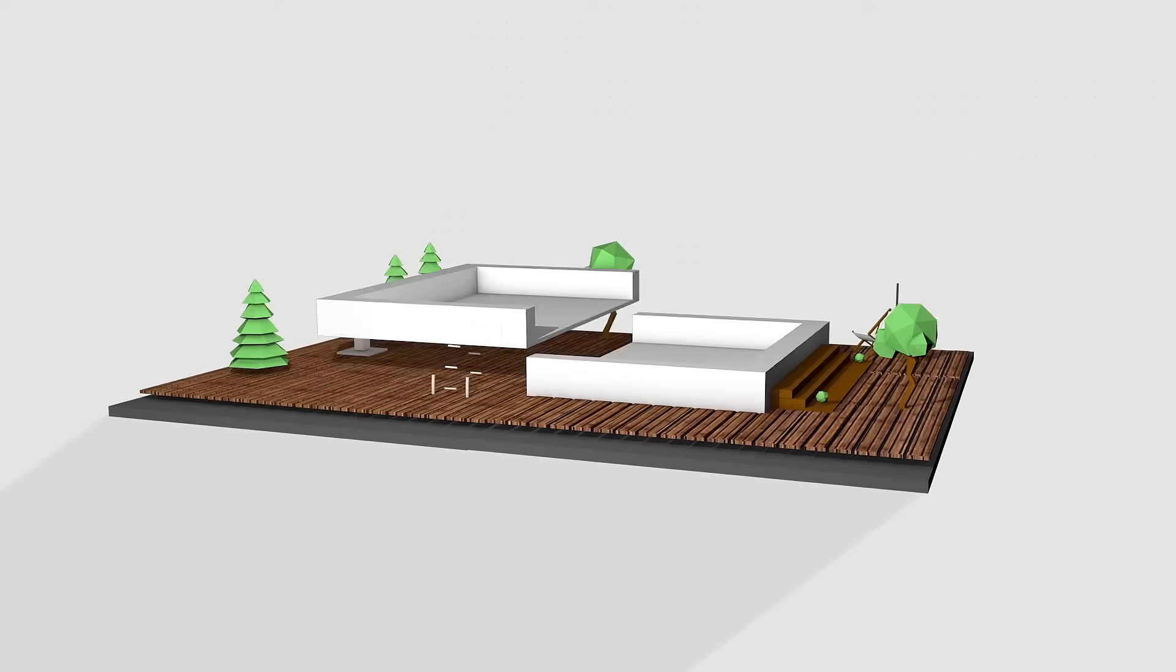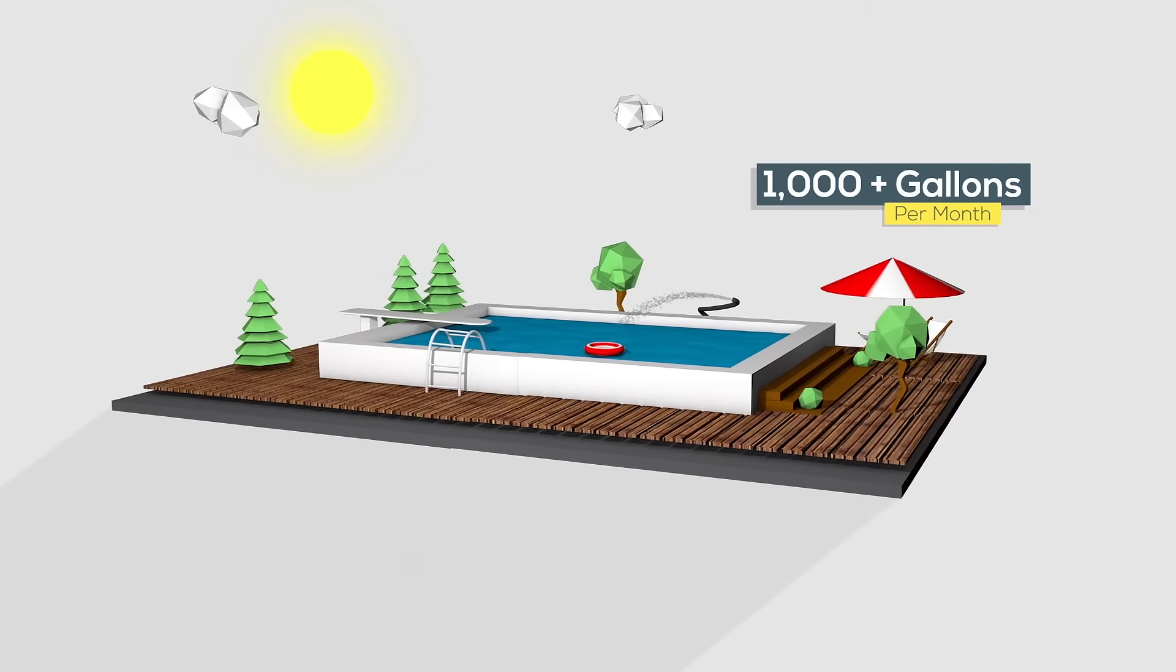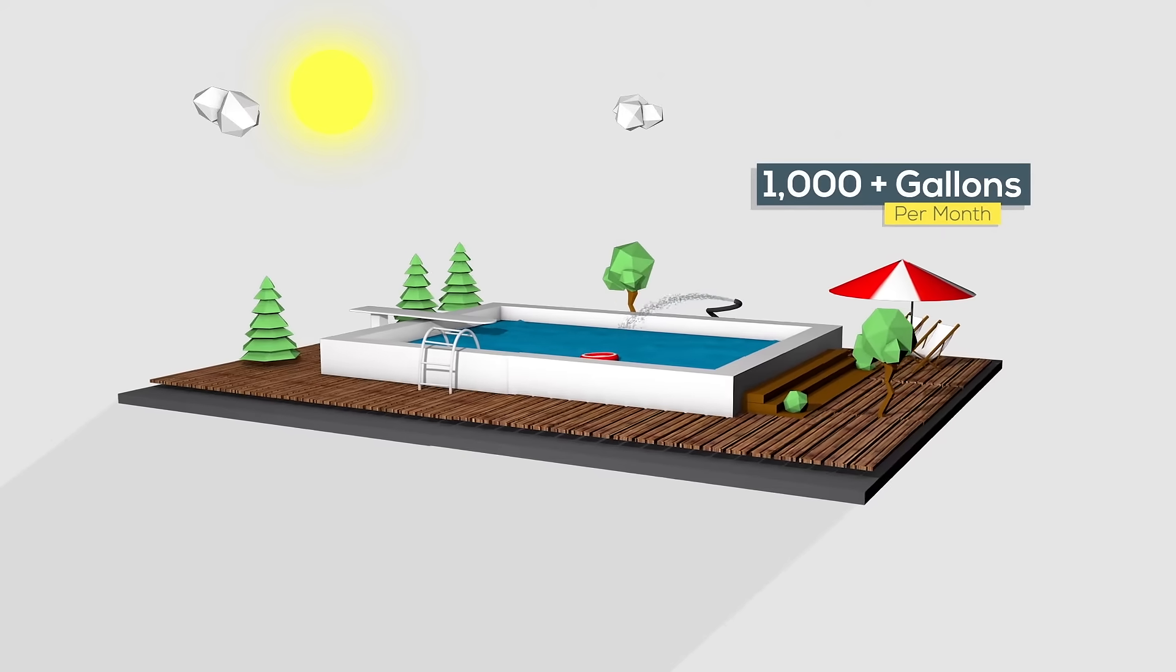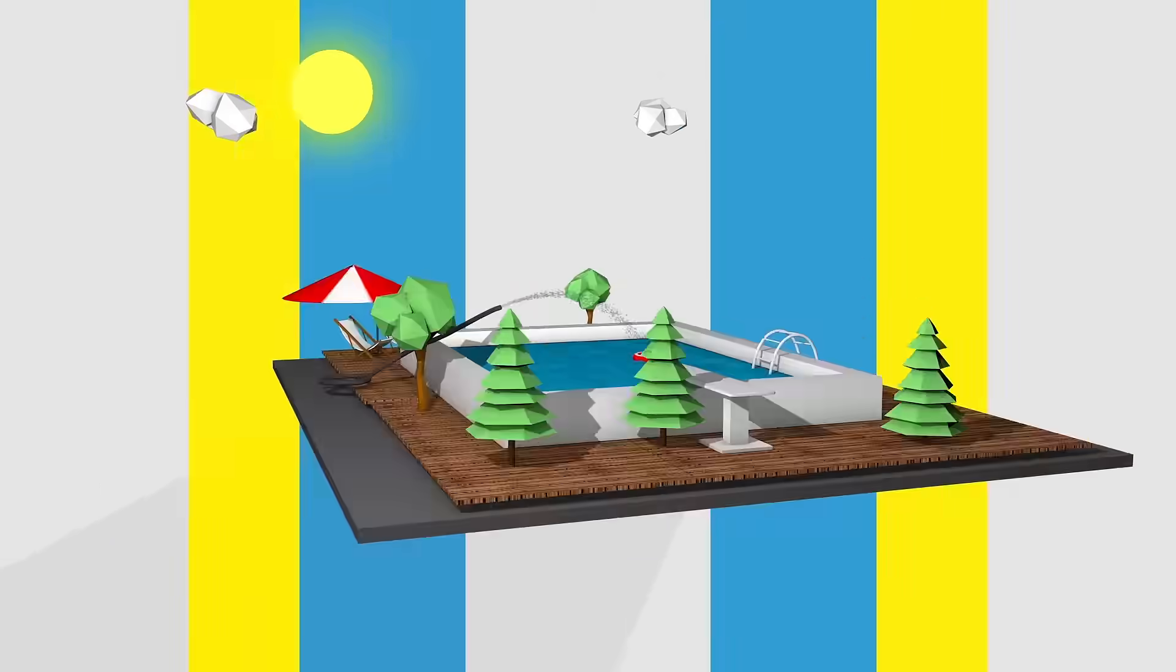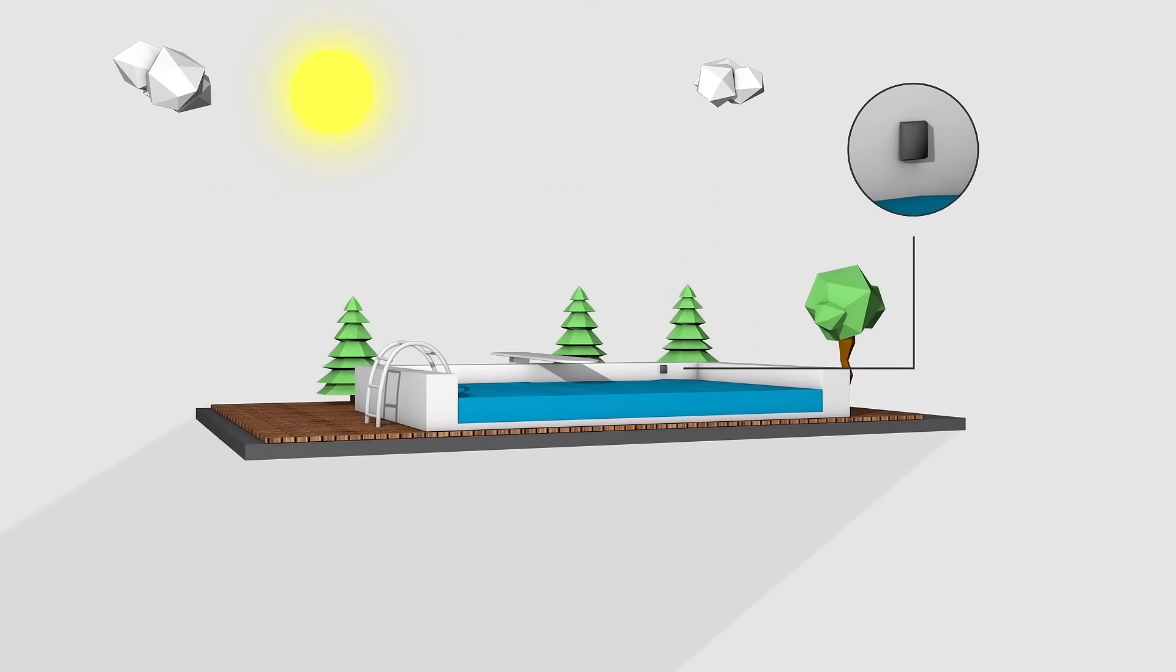Swimming pools naturally lose thousands of gallons of water each month due to evaporation, backwashing, and splash-out, requiring continuous replenishment to maintain the proper water level.